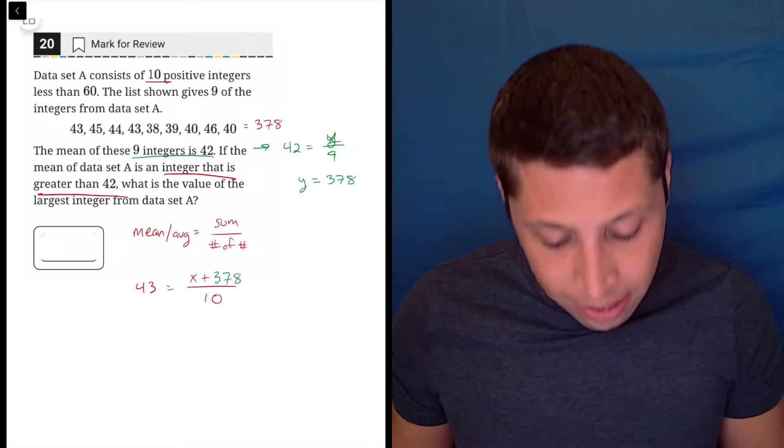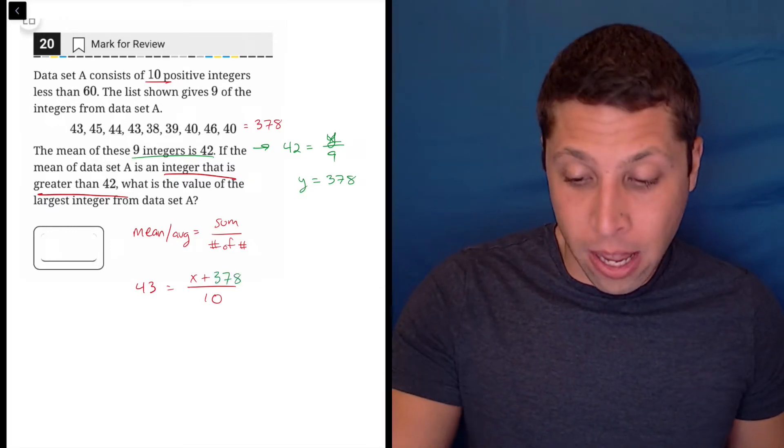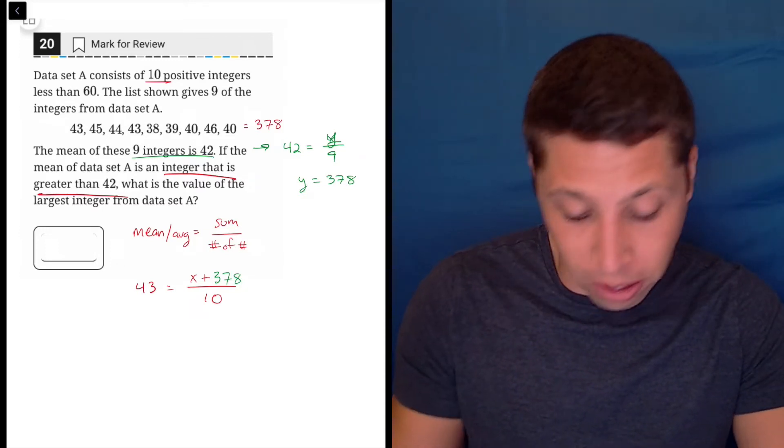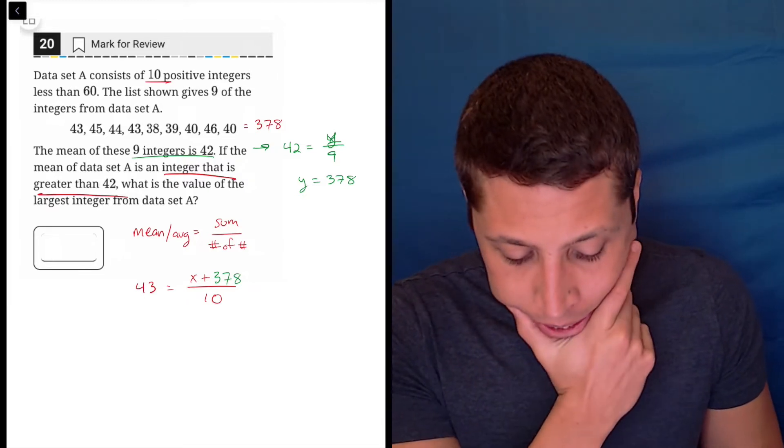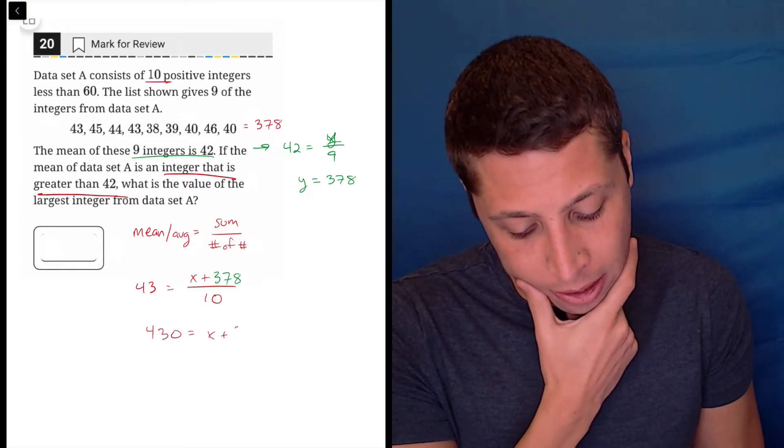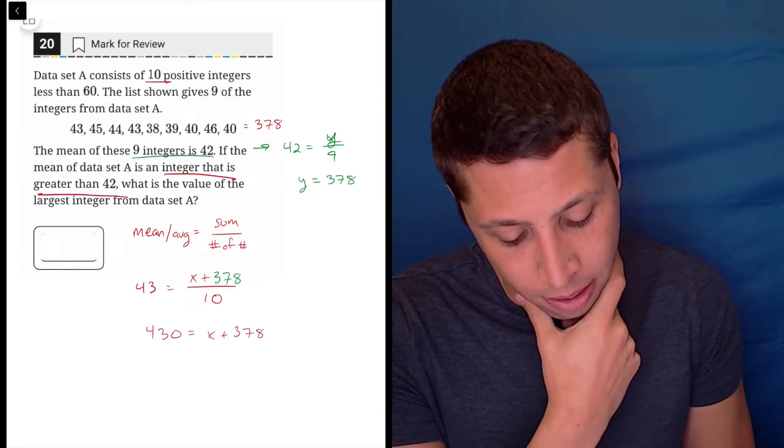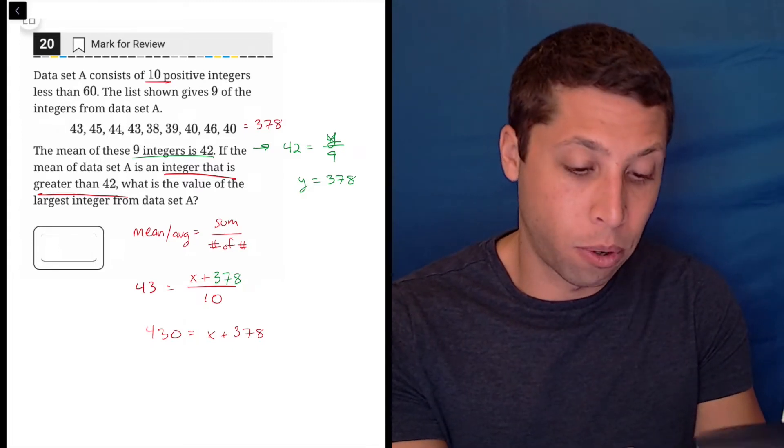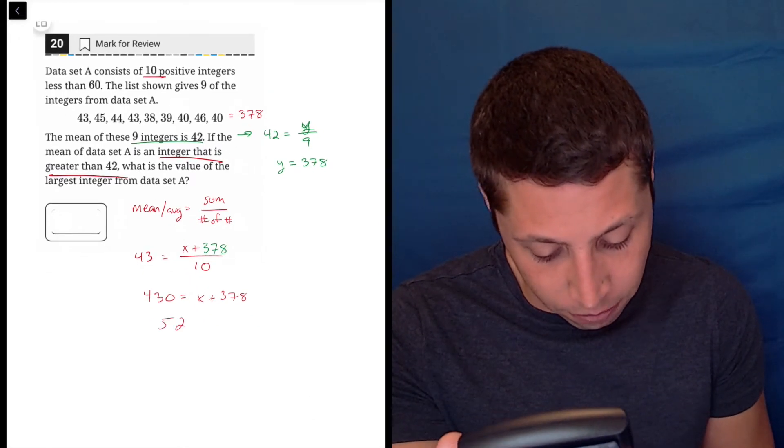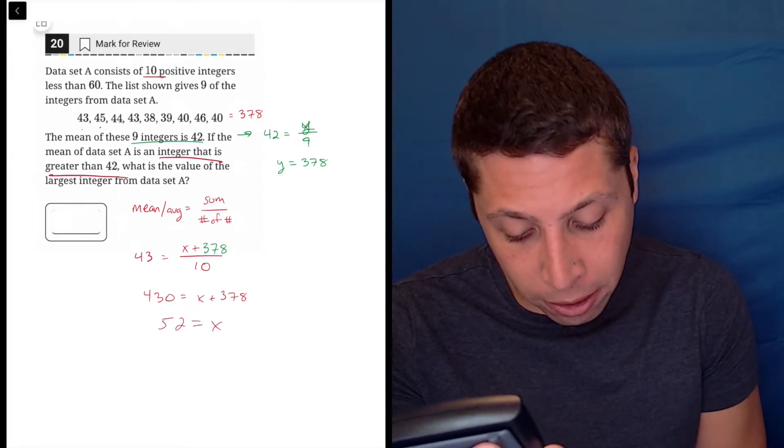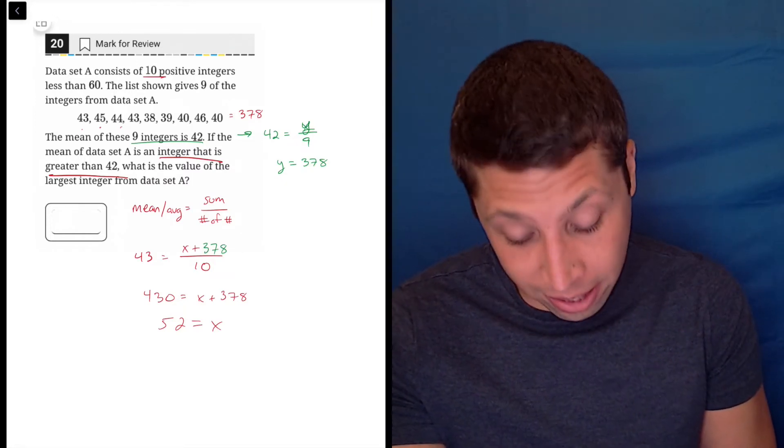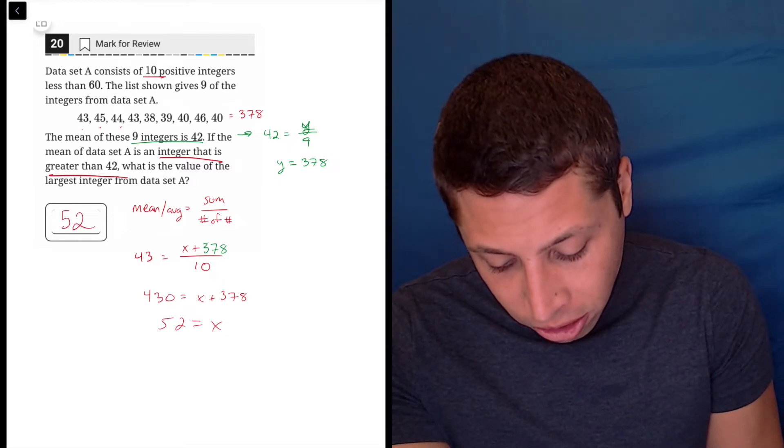So that number is added into some other number. We're trying to find basically what is the largest number in this set. I guarantee you it's going to be X. There's no way it's one of the numbers sitting there. So let's solve. So this multiplied by 10, we get 430 is equal to X plus 378. Subtract the 378, so 430 minus 378 is 52. Now, 52 is bigger than all the other numbers in this set. So it stands to reason that that's probably the largest number that it could be.